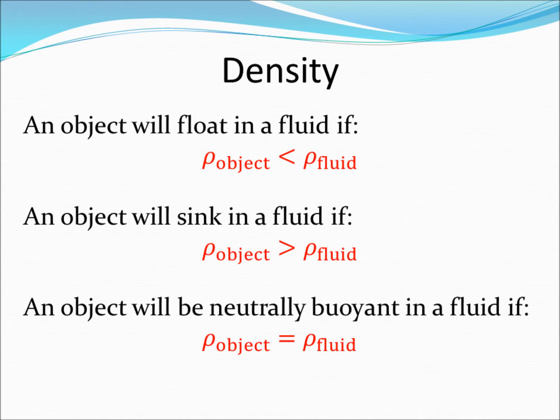An object will float in a fluid if the average density is less than the density of the fluid. An object will sink in a fluid if the average density is greater than the density of the fluid. And finally, an object will be neutrally buoyant in a fluid if its average density equals the density of the fluid.